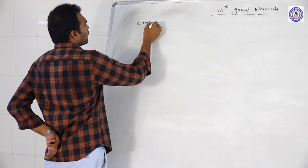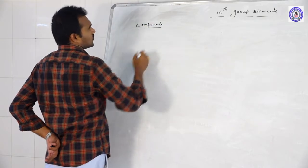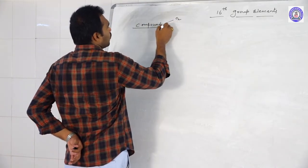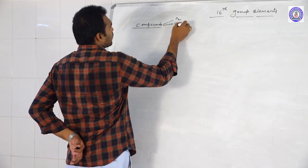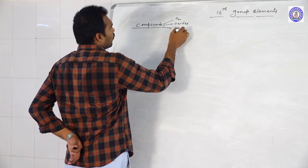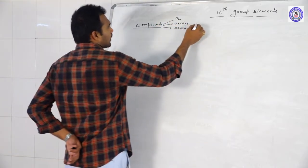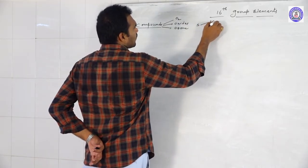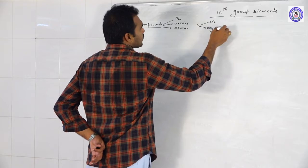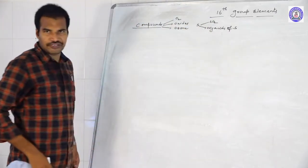Compounds of 16th group elements. We will discuss O2 — Dioxygen, Oxides, and Ozone. These are the three compounds of Oxygen. Coming to Sulphur, we will discuss SO2 and Oxyacids of Sulphur. Total five compounds we need to discuss.